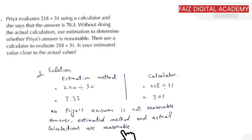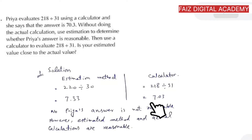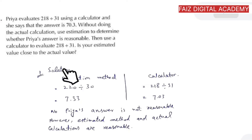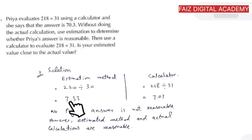We can conclude that Priya's answer is not reasonable. However, the estimated method and actual calculation are quite close to each other. The estimated method gave 7.33, the calculator method gives 7.03, and what Priya was claiming was 70.3. So Priya's answer was wrong, but the estimated method and calculator method answers are quite reasonable.